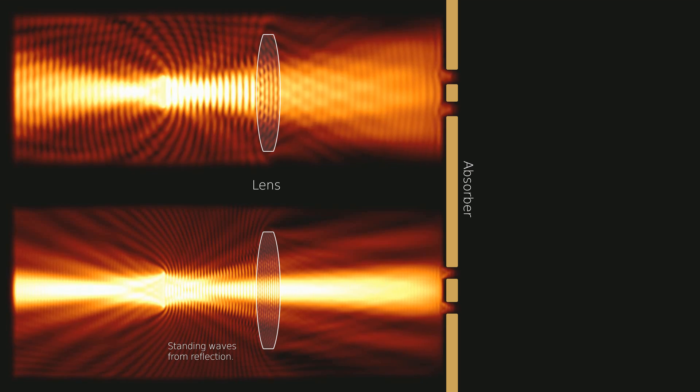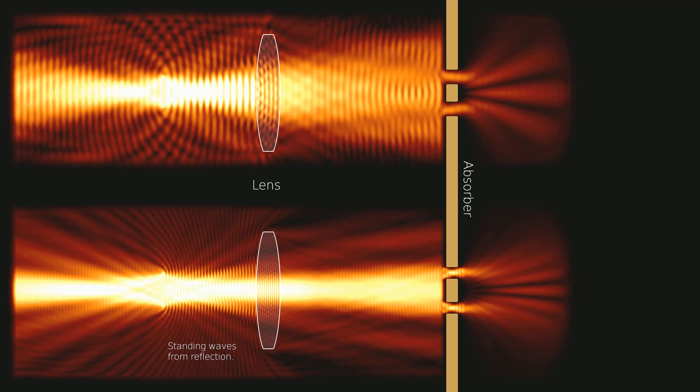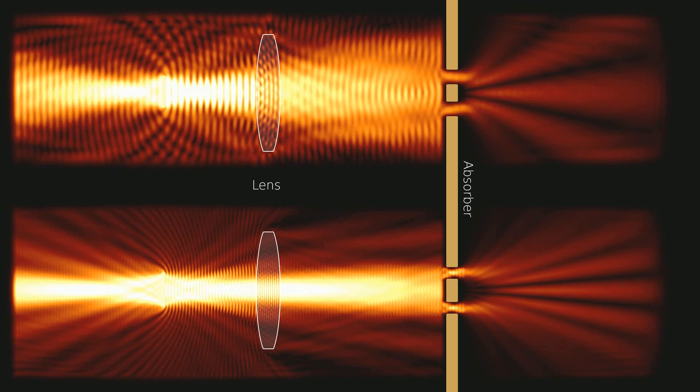Note the standing waves forming in front of the lens due to partial reflection of the incoming light. Also, the interference fringes on the right are now clearly visible.